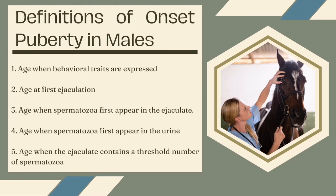Fourth is the age when spermatozoa first appear in the urine. Most spermatozoa delivered by the testes are lost in the urine during periods of sexual rest. The existence of spermatozoa in the urine indicates that spermatogenesis is surfacing. Systematic urine collection is complex in large domestic animals and requires special equipment. Therefore, this method for estimating pubertal onset has limitations. Lastly is the age when the ejaculate contains a threshold number of spermatozoa. Even though an ejaculate may contain spermatozoa, there may be insufficient numbers to accomplish optimum fertilization. Therefore, the presence of a minimum number of spermatozoa is required.